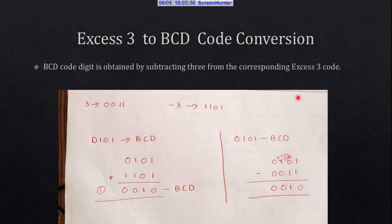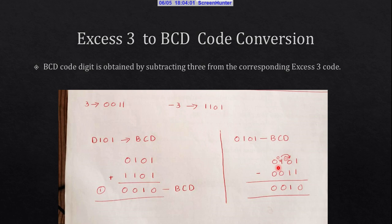We can also convert the XS3 code back to BCD by subtracting 3 from the corresponding XS3 code. For example, 0101 is an XS3 code. If we subtract 0011, which is 3, from it, we obtain the BCD code, which is 2.